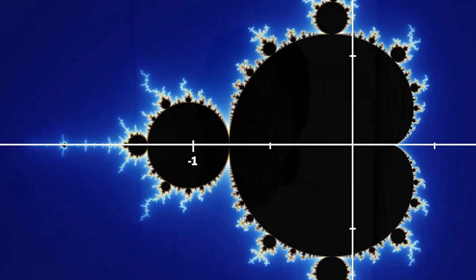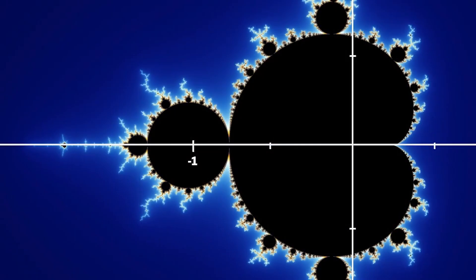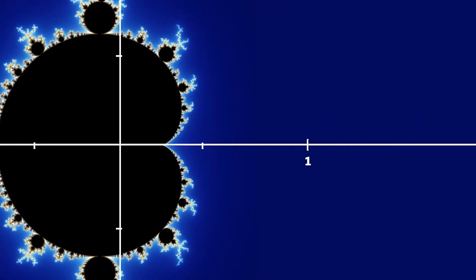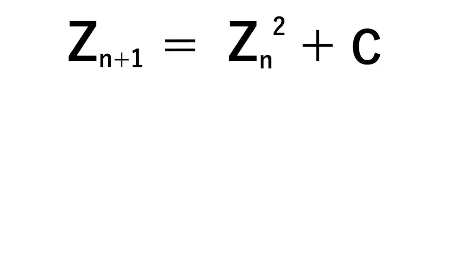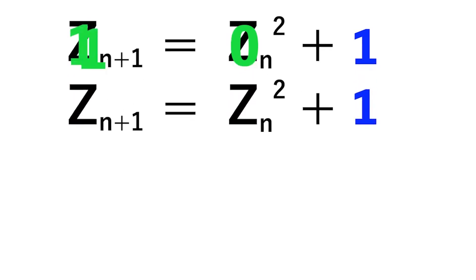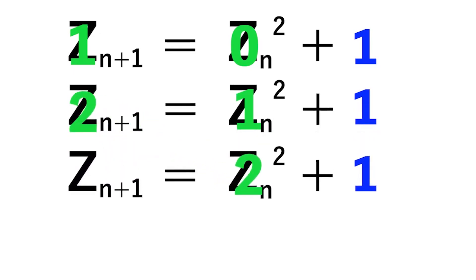Which means that when graphing the set, c is a mixture of a value on an imaginary axis and a regular number axis. Basically, you pick a c value, let's say one, plug that into the equation. Zn is going to be zero since it's the starting iteration, making one. Then you plug that one into the next iteration, making one plus one equal to two. Plug that into the next iteration, four plus one is five.